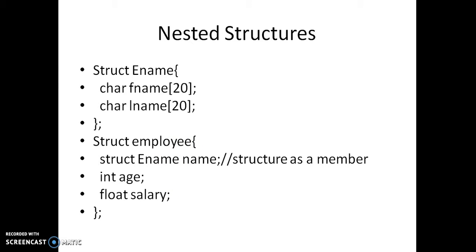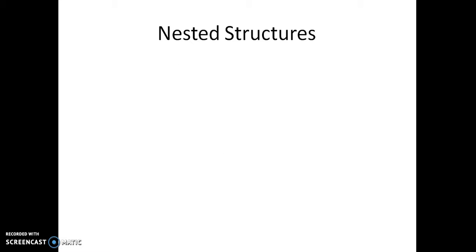So if we have a structure as a member, then how do we access the members of that structure? For example, in this case, how to access the first name of the employee or how to access the last name of the employee? We know that to access age or salary, we will use the employee variable dot age, employee variable dot salary. Then how to access first name and last name from employee? Let us see.